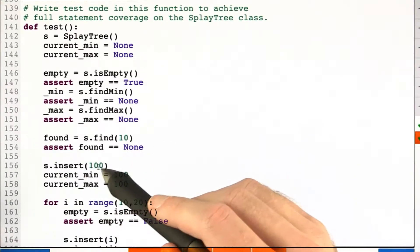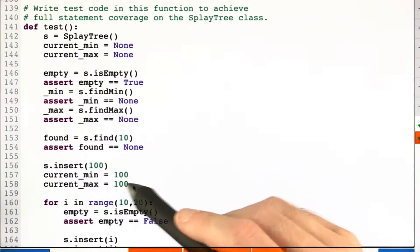Now we insert 100 in here and set the current min and max to be 100, just to initialize the tree to something.